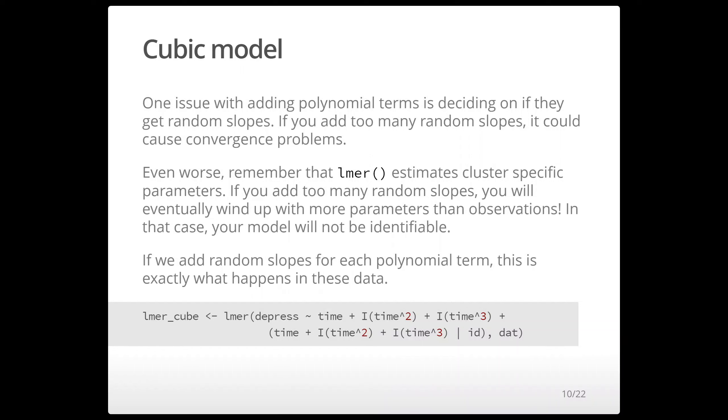So one thing that comes up with polynomial terms is that we have to decide on which ones get random slopes and this is not that straightforward because when you add polynomial terms their interpretations aren't necessarily as straightforward as when you just have the linear terms.